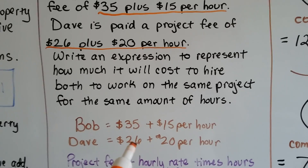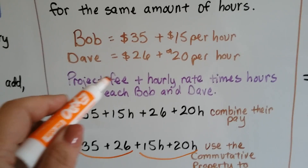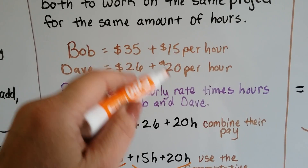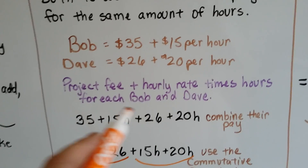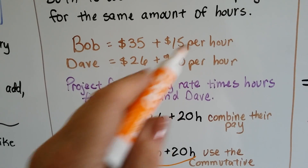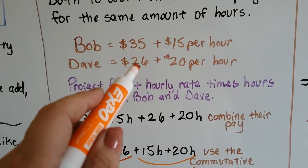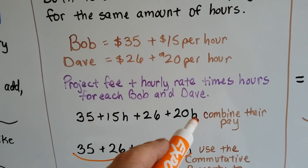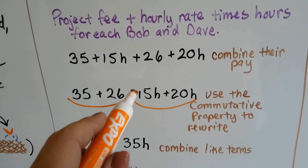Bob is thirty-five dollars plus fifteen per hour, and Dave is twenty-six for the project fee and twenty dollars per hour. We write our expression using the project fees — thirty-five and twenty-six — plus the hourly rates — fifteen and twenty — multiplied by how many hours they each work. So we write (35 + 15h) plus (26 + 20h), where h represents the number of hours worked. That gives us their combined pay.